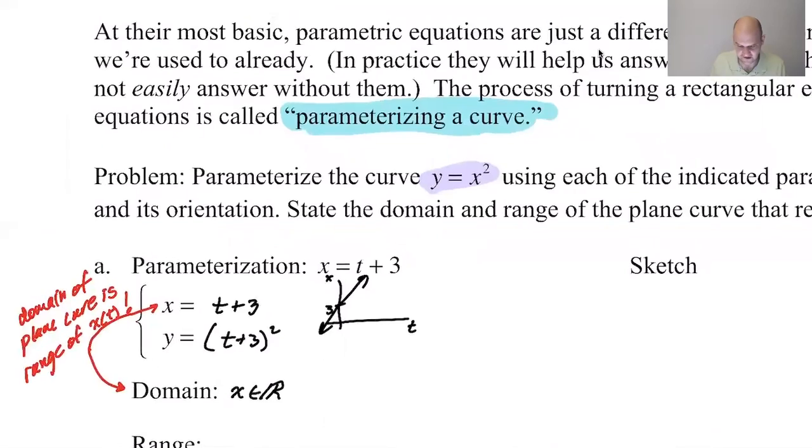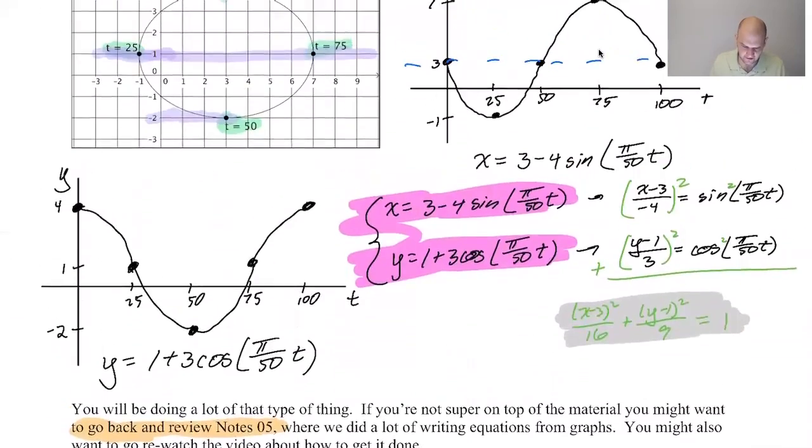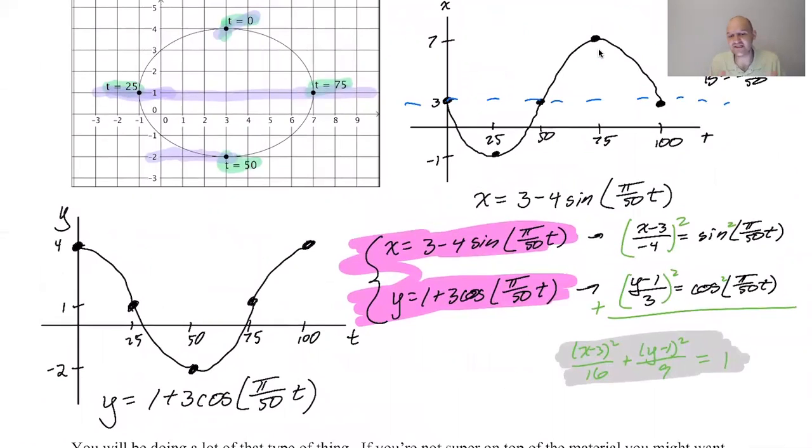We've actually kind of seen this, so I'm going to go back to the previous notes. Here, for example, this is not a function, but we can still talk about the domain and the range of the graph, I suppose. So here, x is three minus four sine. The range of this is from negative one to seven, which meant that the plane curve is stuck between negative one and seven.